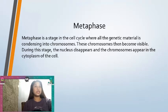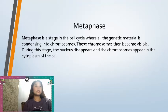Next is metaphase. Metaphase is a stage in the cell cycle where all the genetic material is condensing into chromosomes. These chromosomes then become visible. During this stage, the nucleus disappears and the chromosomes appear in the cytoplasm of the cell.